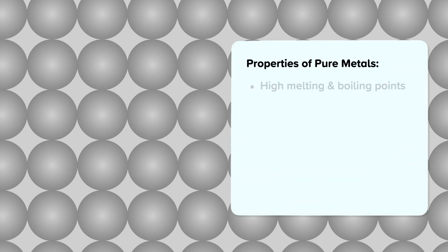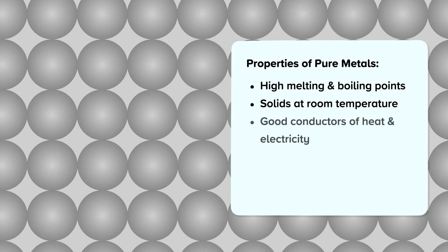Properties of pure metals. Pure metals have high melting and boiling points. They are solids at room temperature. They are good conductors of heat and electricity. They are malleable, ductile and have a high density.